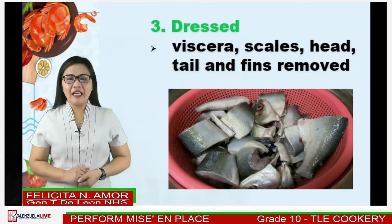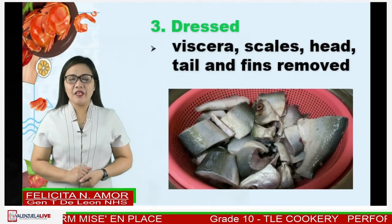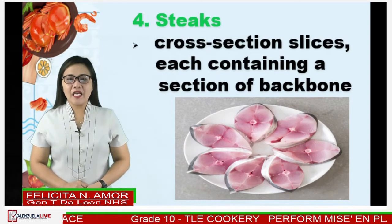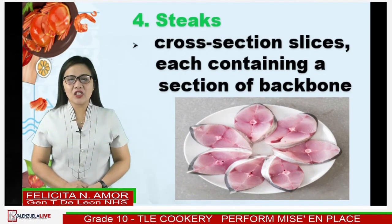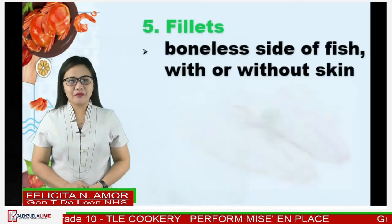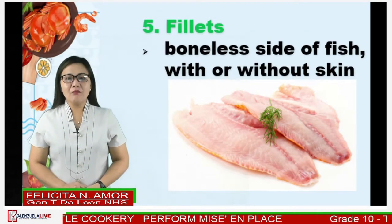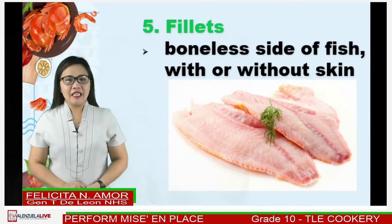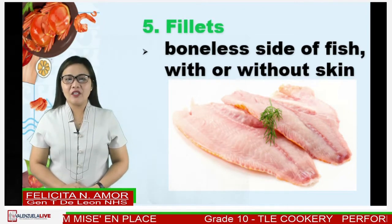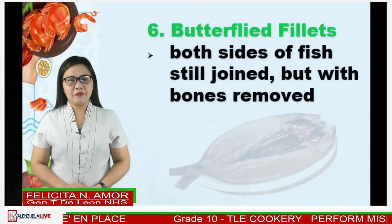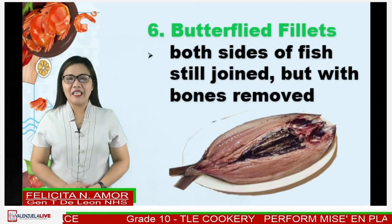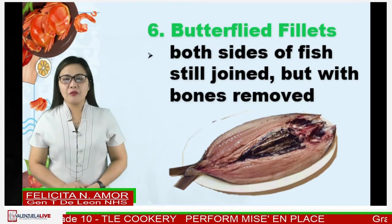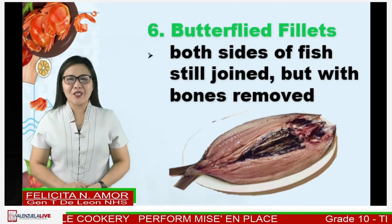Number three, dressed — viscera, scales, head, tail, and fins removed. Number four, steaks — cross-section slices each containing a section of backbone. Number five, fillets — boneless side of fish with or without skin. Fillet is a French word meaning a thread or strip. Number six, butterflied fillets — both sides of fish still joined but with bones removed.